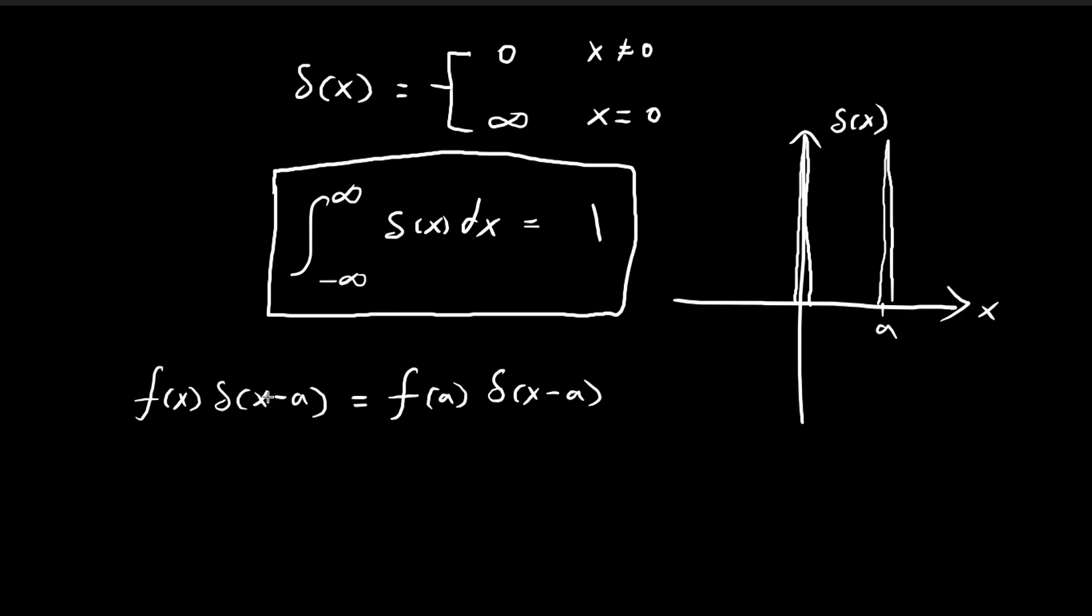This is true because when x is not equal to a, both expressions equal 0. When x equals a, we have f of a on both sides, and these two terms are identical. So this identity has to be true.